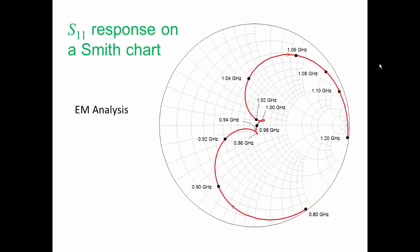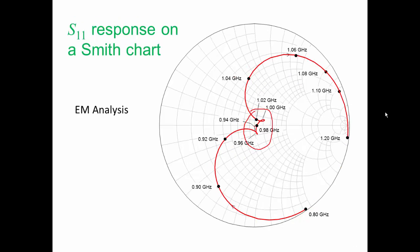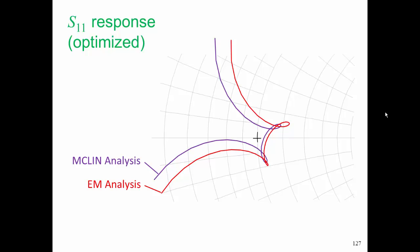Here's the response on the Smith chart. We see in this central region that the response is not symmetrical, and our origin is right in this middle point here. Let's quickly compare this to the results of the MCLIN analysis. So there's the MCLIN result, and back here is the EM analysis. Those responses look almost identical, except for the difference occurring around the origin.